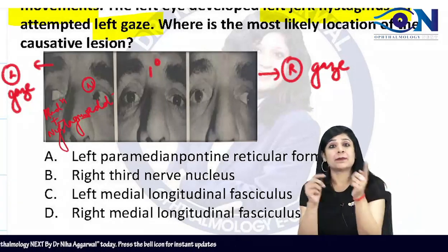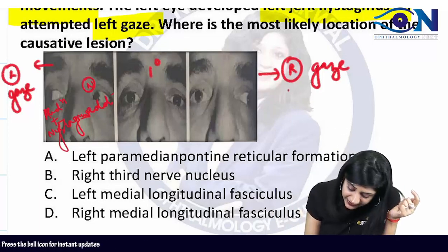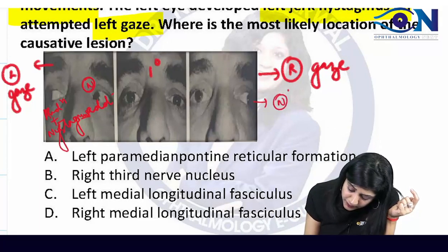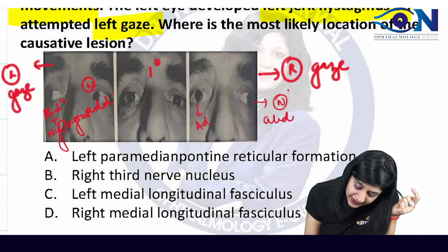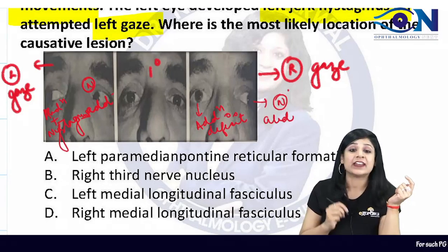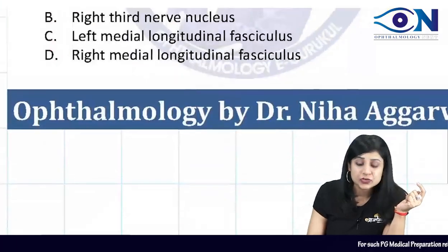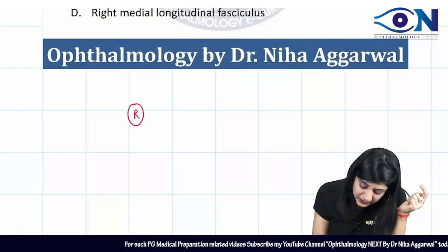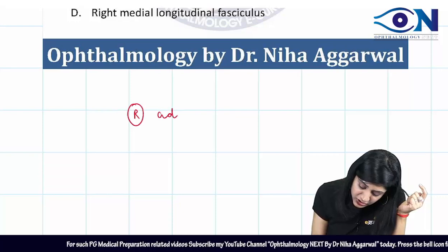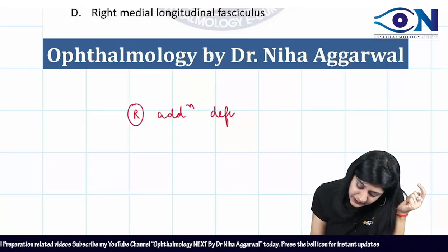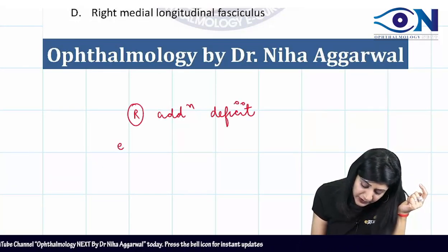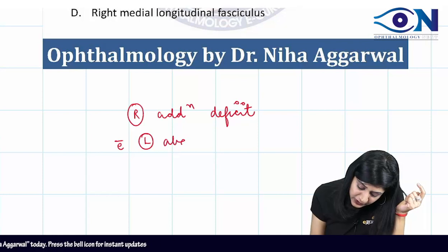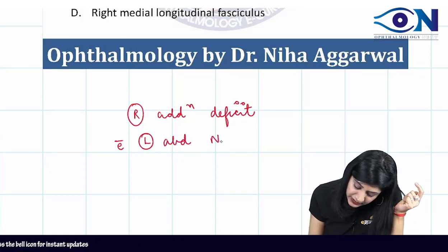When the patient is trying to see towards the right gaze there is normal abduction, but there is an adduction deficit. So I can say that there is a right adduction deficit with the left abduction nystagmus.